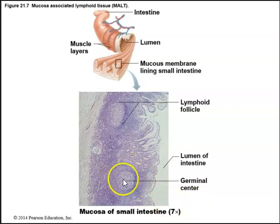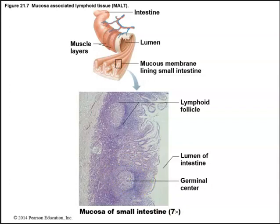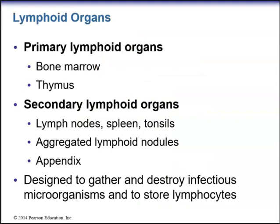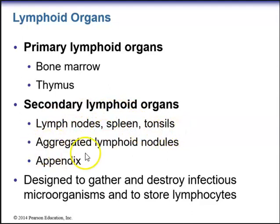Here we see an example of mucosa-associated lymphoid tissue in the small intestines, with the germinal center of the lymphoid tissue visible. Primary lymphoid organs include bone marrow and thymus; secondary lymphoid organs include lymph nodes, spleen, tonsils, aggregated lymphoid nodules, and the appendix. The lymphoid organs are designed to gather and destroy infectious microorganisms and to store lymphocytes.